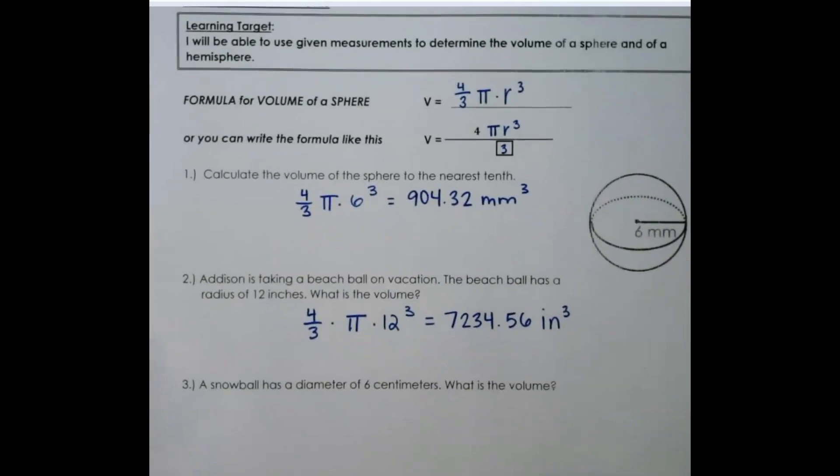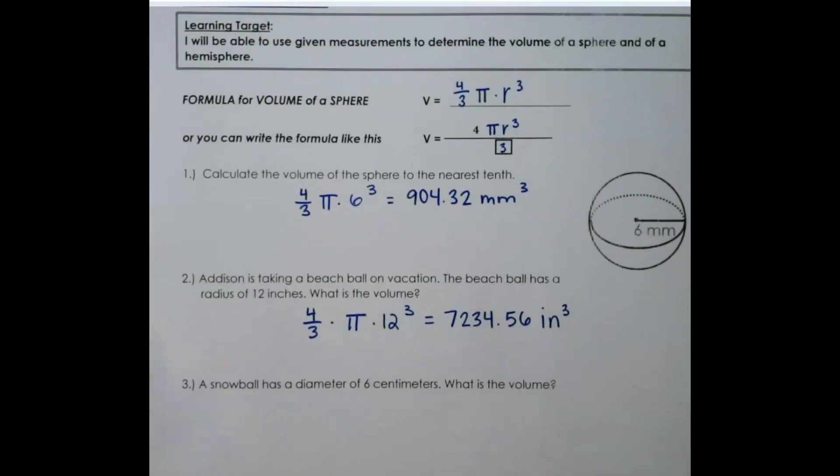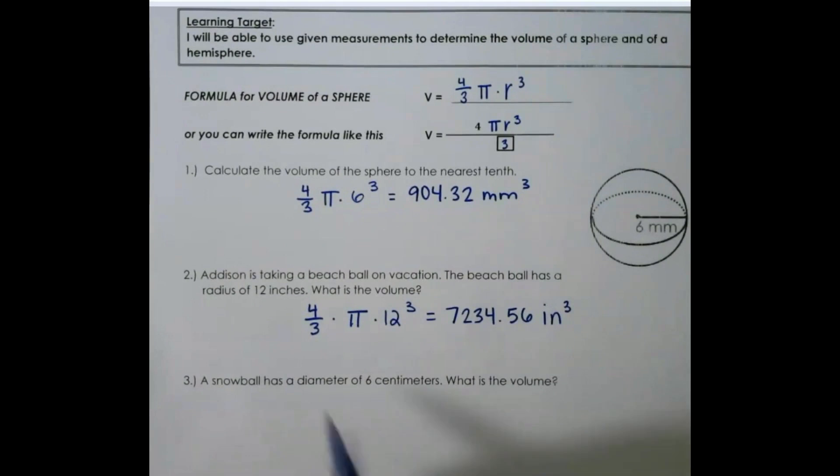For our third example, a snowball has a diameter of six centimeters. What is the volume? Since I have diameter here, remember that you have to take that number and divide it by two to get the radius, so four-thirds times pi times three cubed.